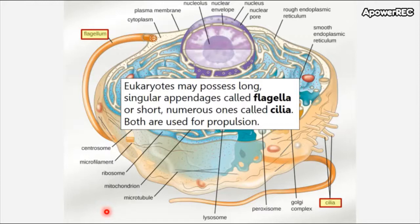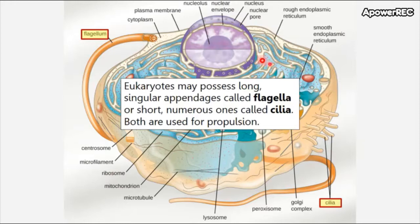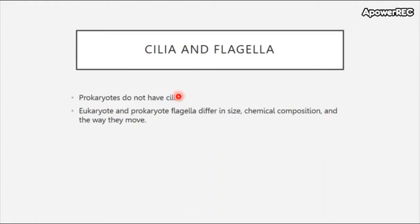Like bacteria, eukaryotes may possess long singular appendages called flagella. However, they also have short numerous ones called cilia, and both are used for propulsion. This is the basic structure of a eukaryotic cell — you see a lot of different types of membranes inside, which allow it to compartmentalize different processes and tasks. Prokaryotes do not have cilia. Eukaryotes and prokaryotes both have flagella, which differ in size, chemical composition, and the way they move.